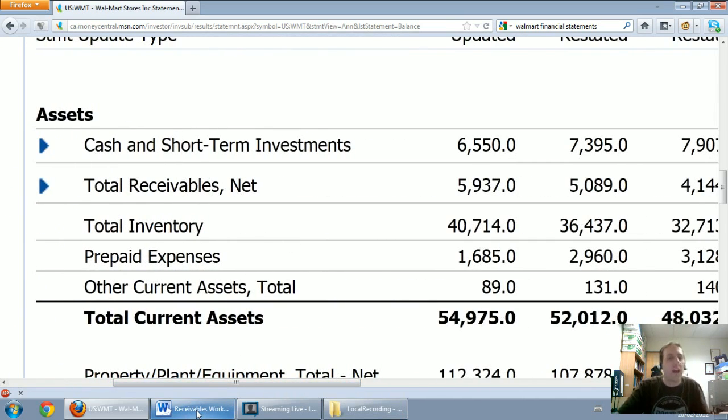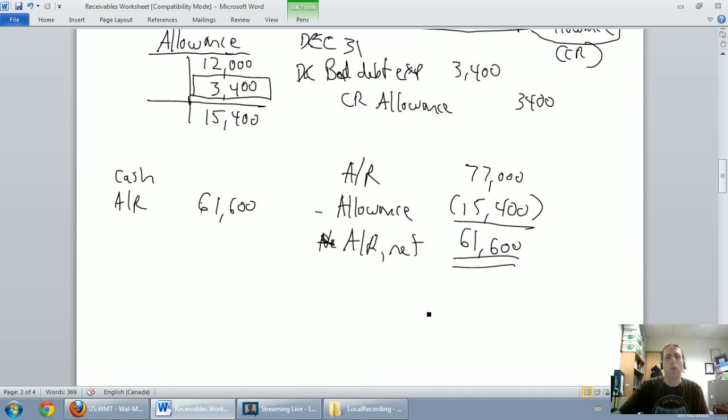Whoops, I zoomed in a little too far, but I think you can see right under cash, it says total receivables net. Well, what is it net of? It's net of their allowance for doubtful accounts. So, we've shown our accounts receivable net. They say total receivables net. Same difference. Now, if you've looked into details and the notes to their financial statements, you would learn about what their allowance was and you could do some evaluation of that number.